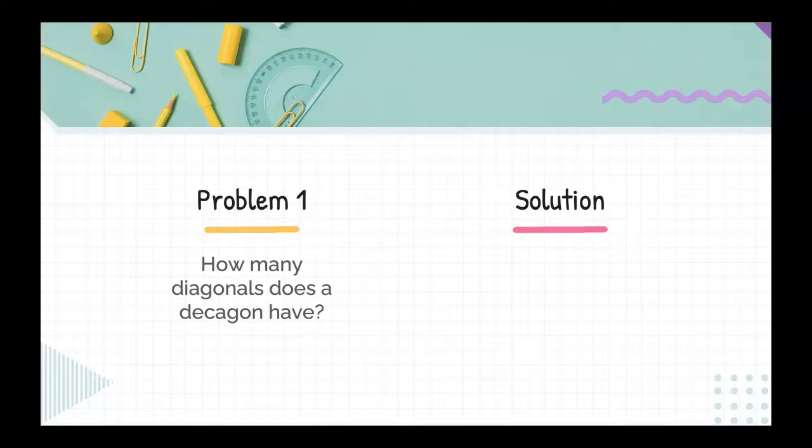To solve this, first you need to know that a decagon has 10 sides, and then we can simply plug it into the formula. We have 10 times the quantity 10 minus three all over two, which equals 10 times seven all over two, which equals 35. So the number of diagonals of a decagon is 35.